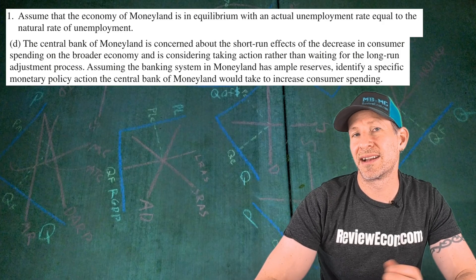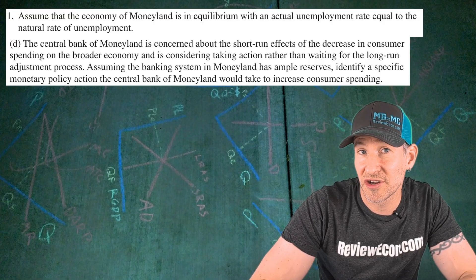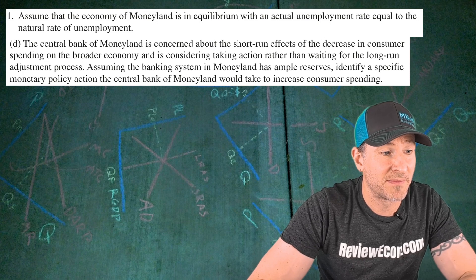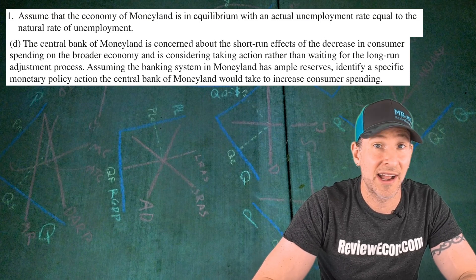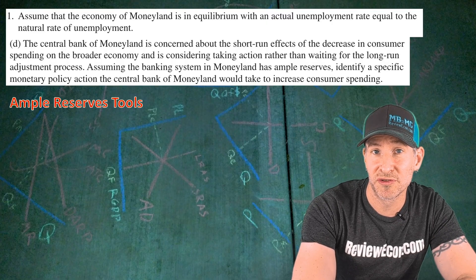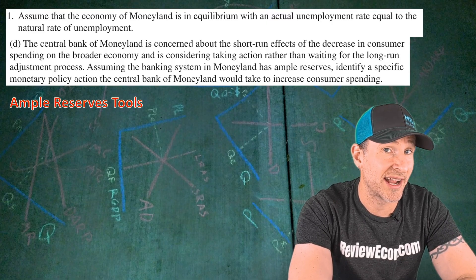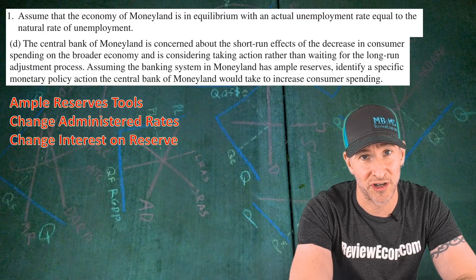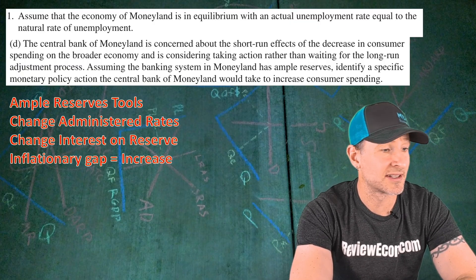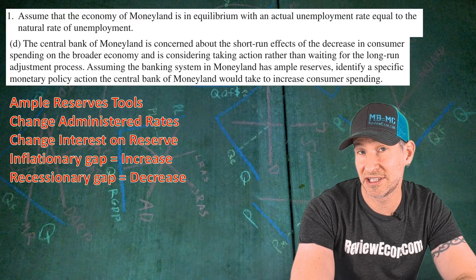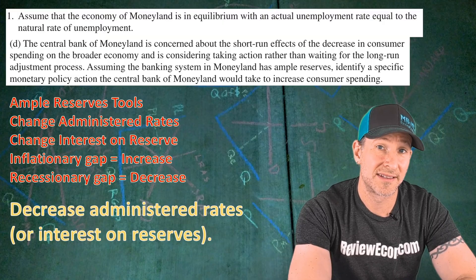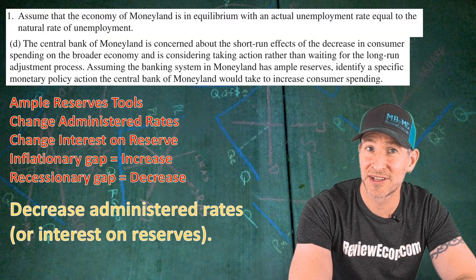For part D, instead of doing nothing, the central bank addresses the recessionary gap caused by the reduction in consumer spending. Moneyland has an ample reserve system, and we need to identify a monetary policy action the central bank can take. There are two ample reserves tools available: change administered rates or change interest on reserves. Since there's a recessionary gap, we decrease interest — so the answer is decrease administered rates or decrease interest on reserves. Either answer gets the next point.